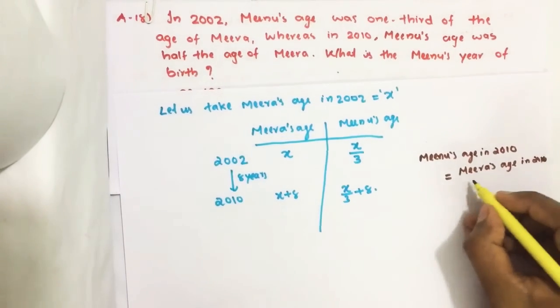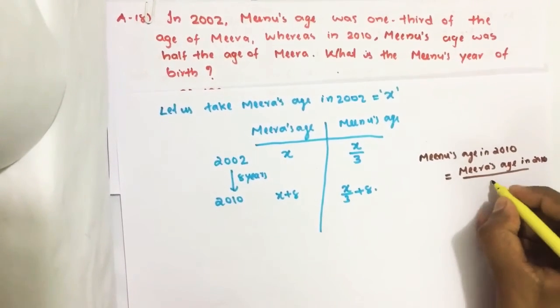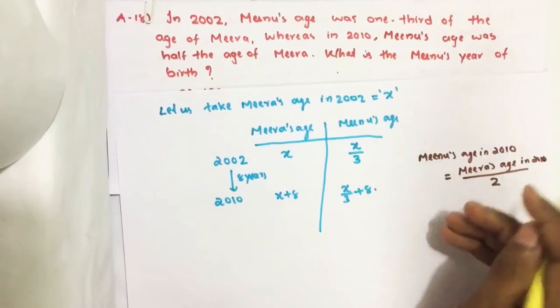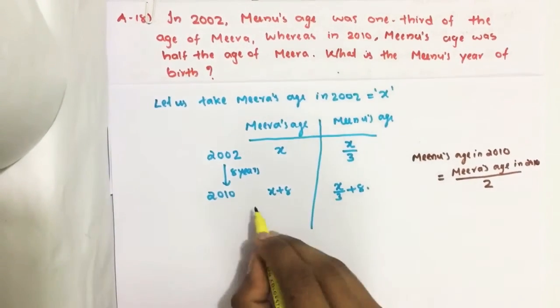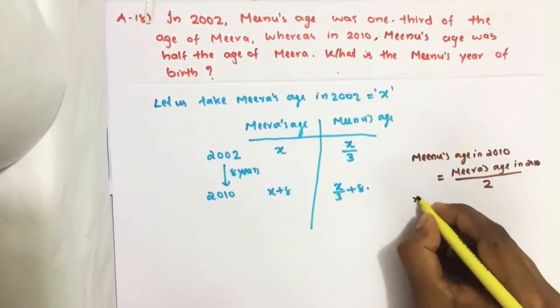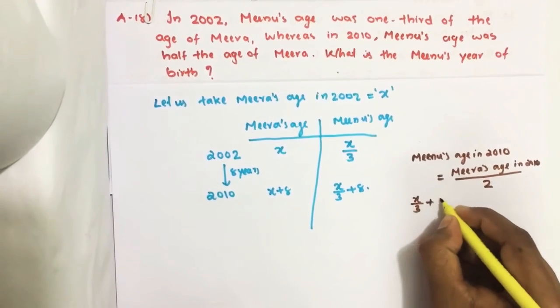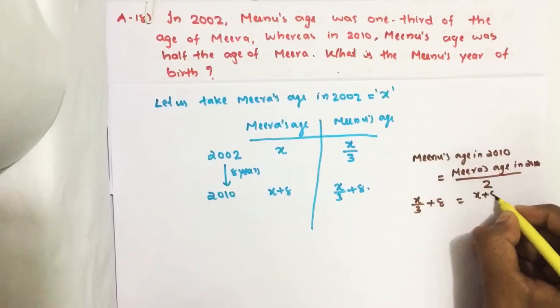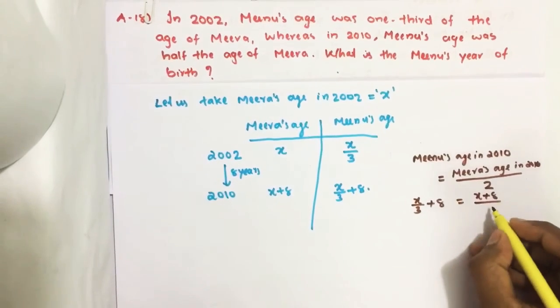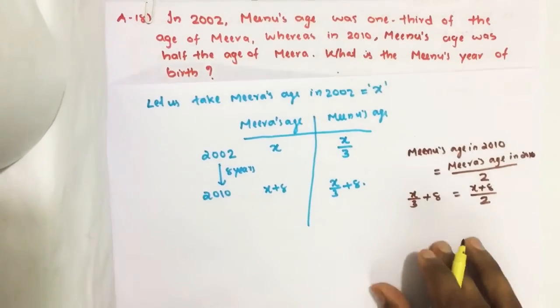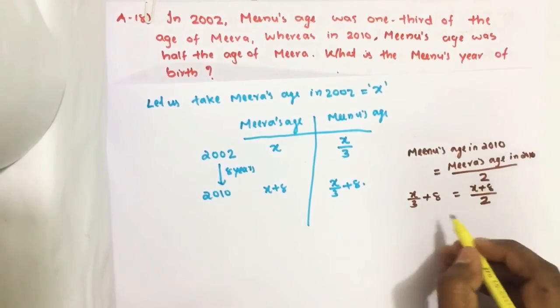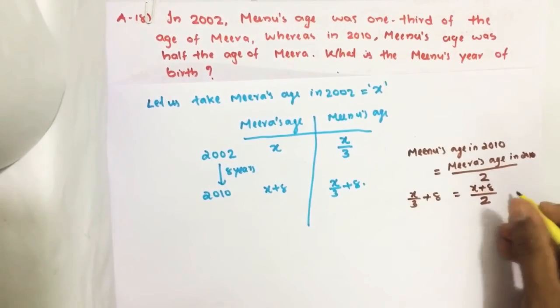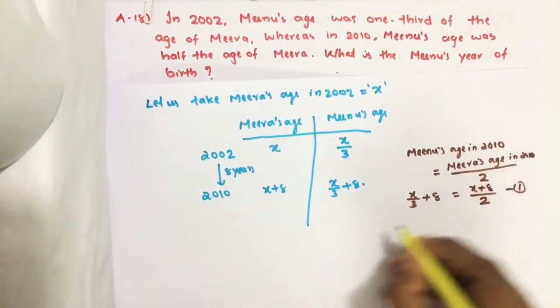What is Minoo's age in 2010? We know it is X by 3 plus 8. What is Mira's age in 2010? X plus 8 divided by 2. We got this equation. Solve this equation.